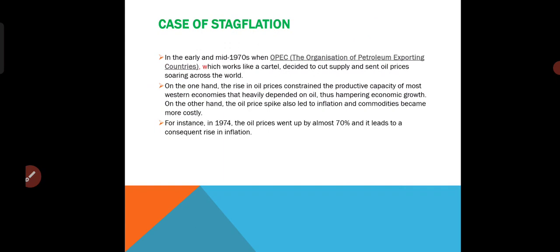That means they were trying to increase the prices of petrol in the world. Because when they reduce the supply, definitely the prices of petrol are going to rise up. On the one hand, the rise in oil prices constrained the productive capacity of most western economies that heavily depend on oil, thus hampering economic growth. On the other hand, the oil price spike also led to inflation as commodities became more costly. When the supply of petrol reduces, whichever countries are most dependent — for example, Middle Eastern oil exporting countries like Saudi Arabia and Russia — if they reduce the supply of crude oil, prices are going to rise up.